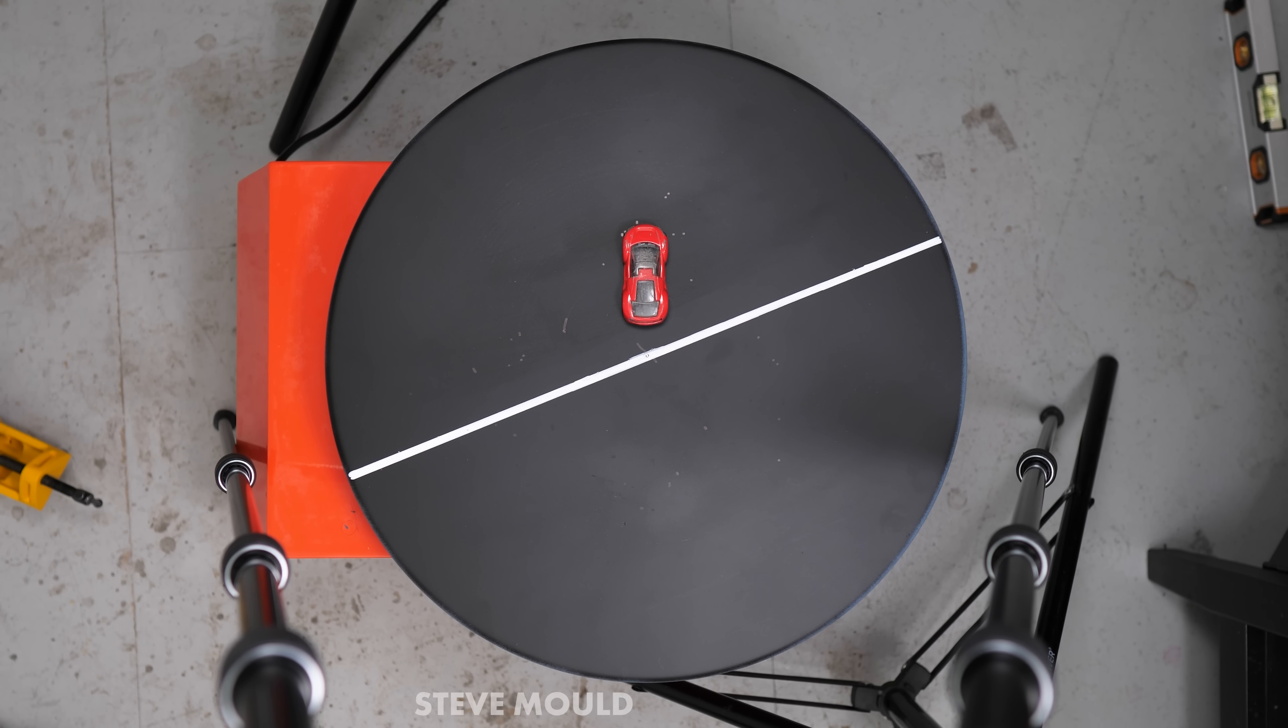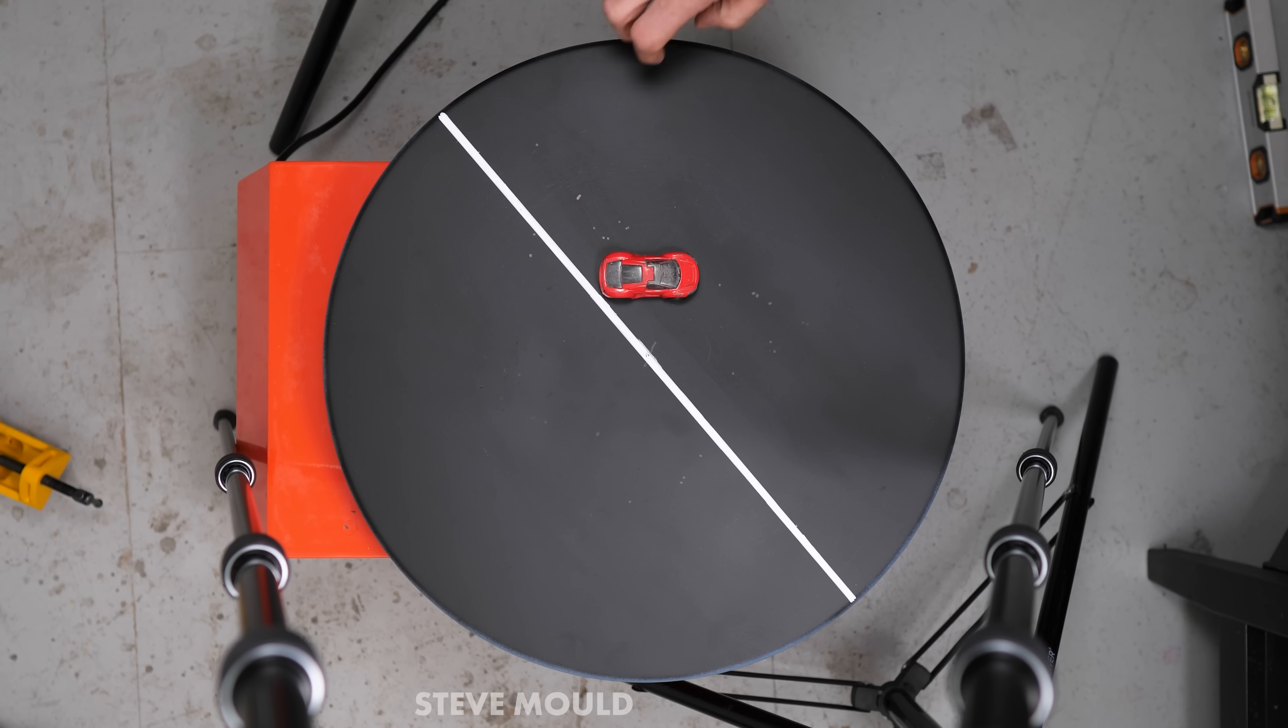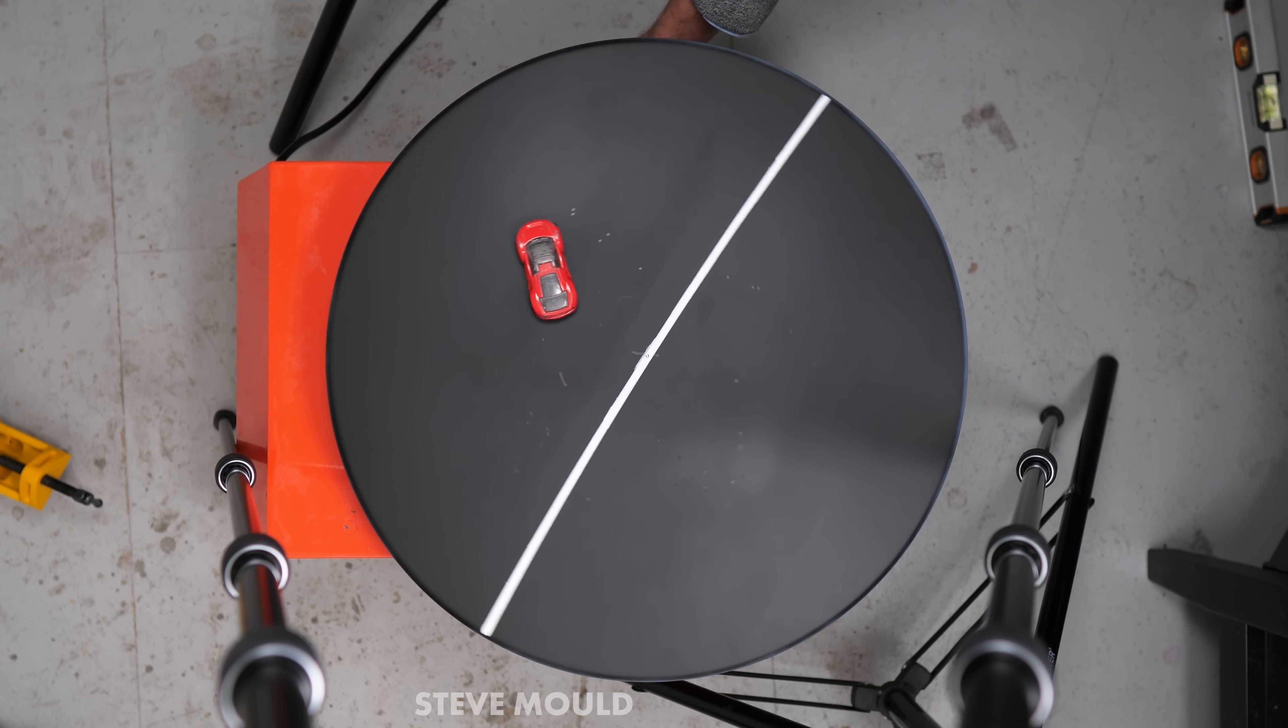Or a toy car. If the toy is pointing outwards, it flies off the turntable quite quickly. But even if it's pointing tangentially, it still leaves the turntable.